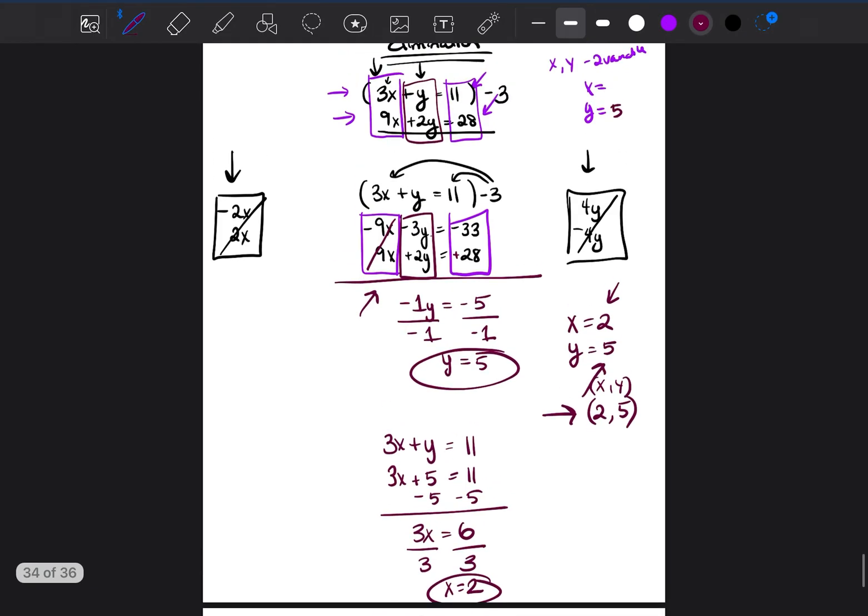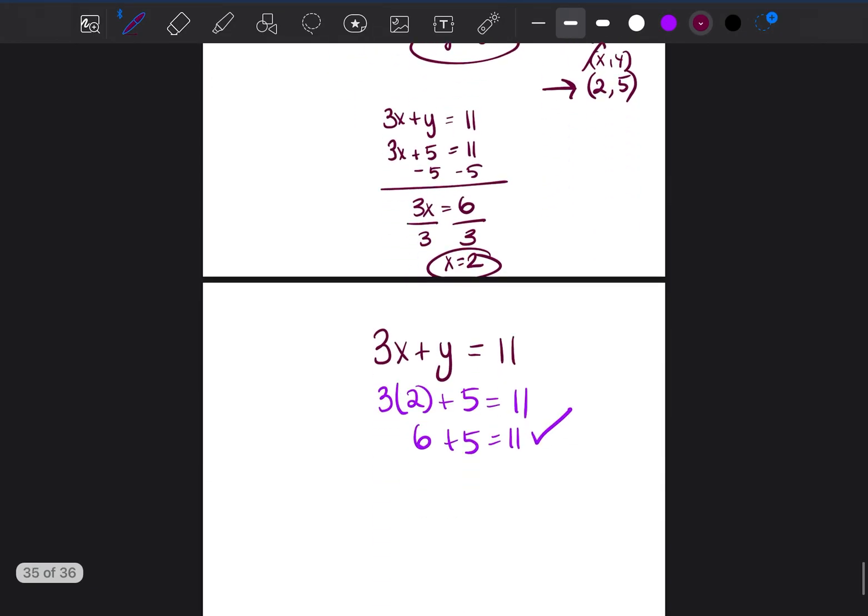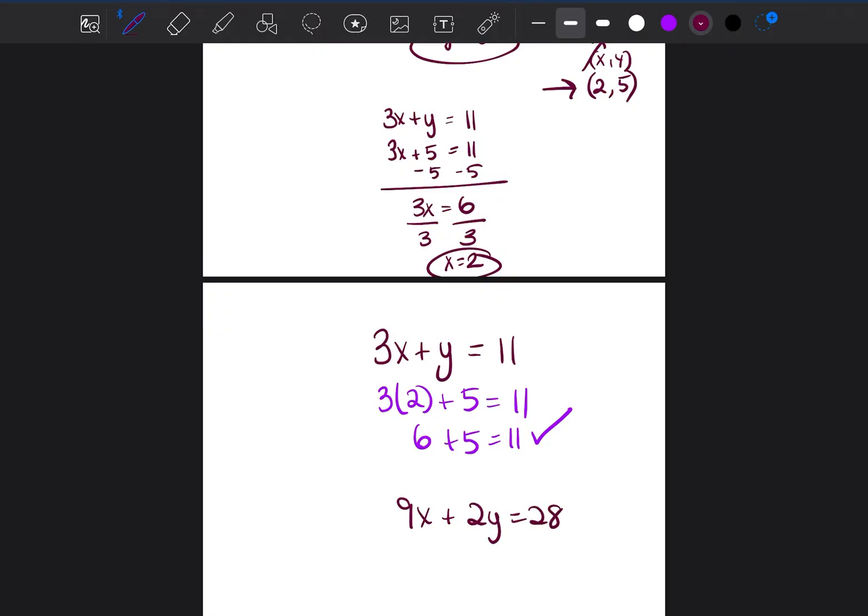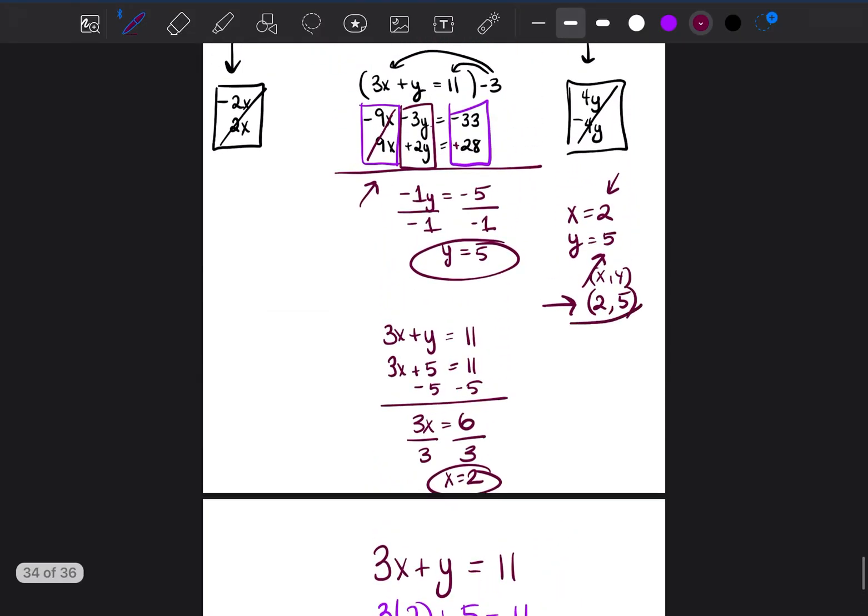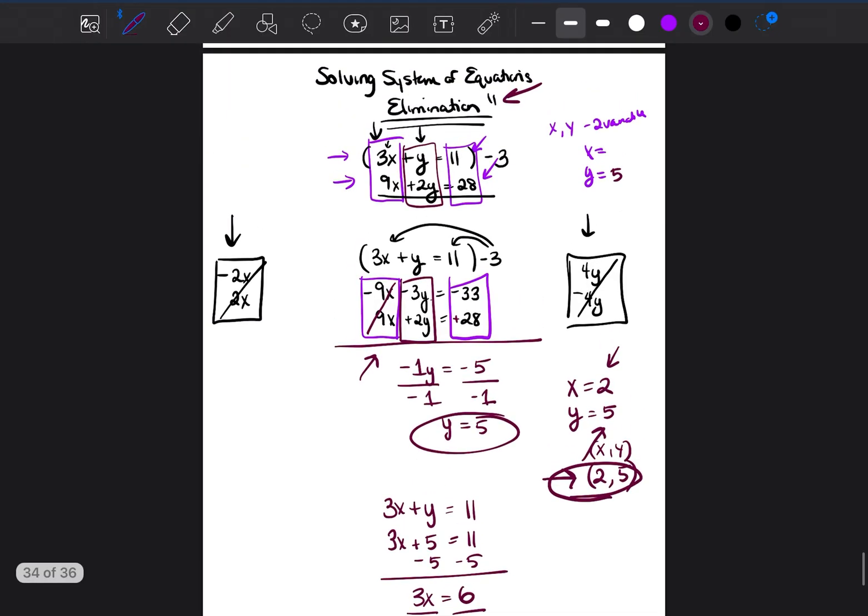And then we can use the second equation. 9x plus 2y equals 28. And we can test that as well. 9 times 2 plus 2 times 5 equals 28. 9 times 2 is 18 plus 10 equals 28. 28 is equal to 28. And that is correct. So we were able to solve for the system of equations 2 comma 5.